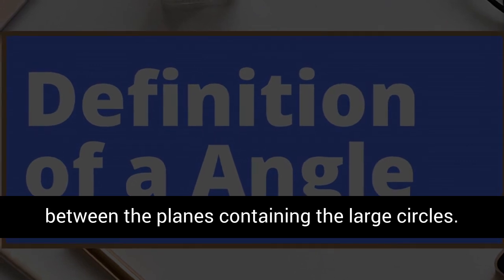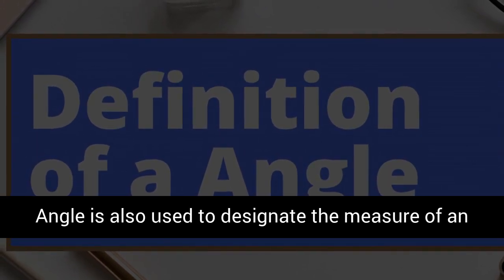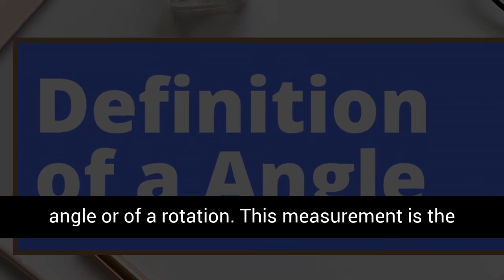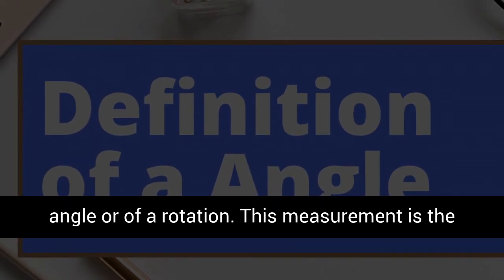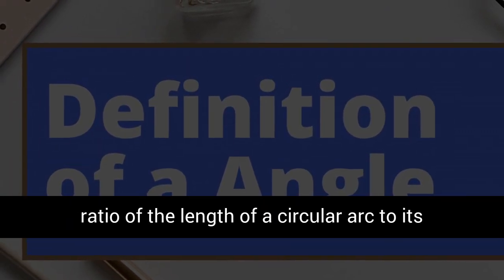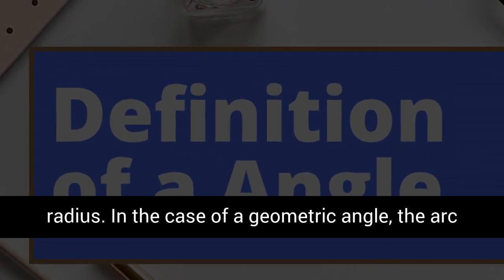Angle is also used to designate the measure of an angle or of a rotation. This measurement is the ratio of the length of a circular arc to its radius. In the case of a geometric angle, the arc is centered at the vertex and bounded by the sides.